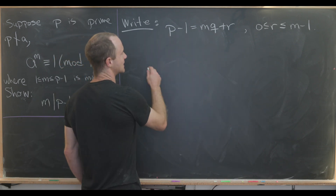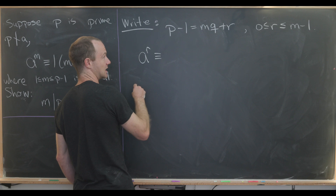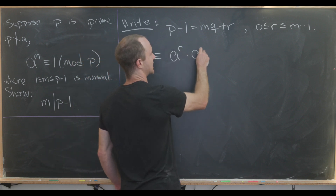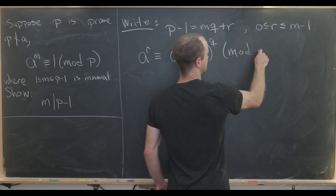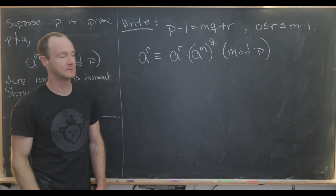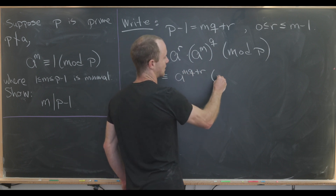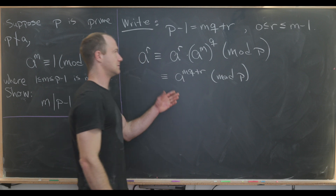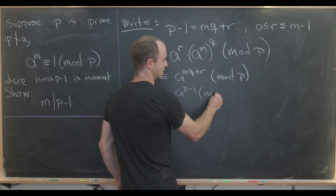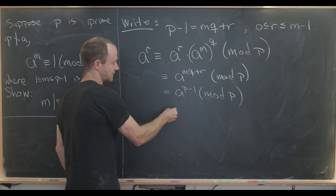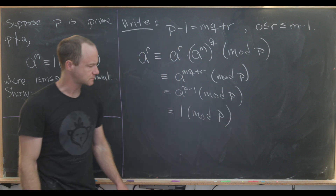Now let's notice that A to the R is congruent to A to the R times 1 mod P, but that's the same thing as A to the R times A to the M all to the Q power mod P — we just multiplied by a fancy version of 1. Using exponent rules, we see that this is congruent to A to the MQ plus R mod P. But by what we have above, that's the same thing as A to the P minus 1 mod P. And using Fermat's Little Theorem, we know that is congruent to 1 mod P.